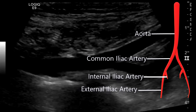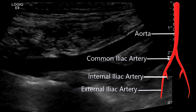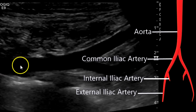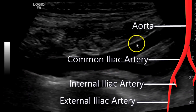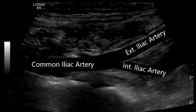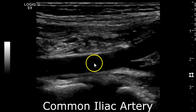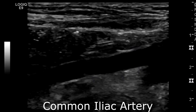Here I'm going to go over the lower extremity arterial anatomy, beginning after the bifurcation of the aorta. So this is a common iliac artery, which bifurcates into external and internal iliac arteries. Here's a closer view of the common iliac artery — common iliac artery, external iliac artery, and internal iliac artery.